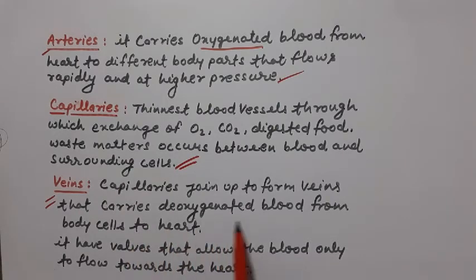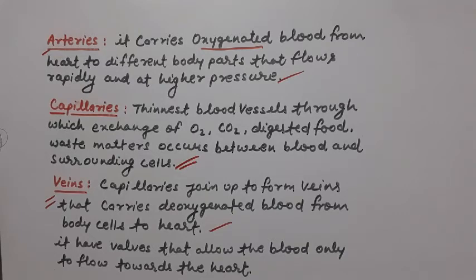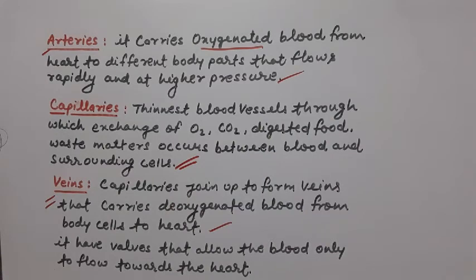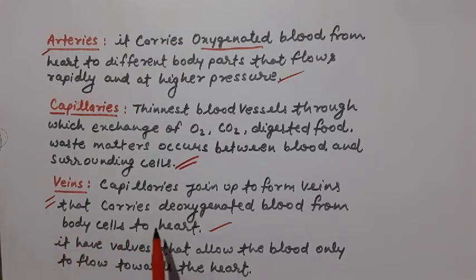Next, about veins — capillaries join up to form veins. Veins carry deoxygenated blood from body cells to the heart. Deoxygenated blood means it is rich in carbon dioxide and other impurities.